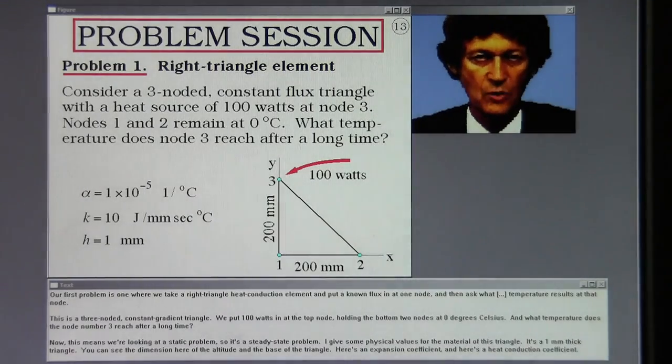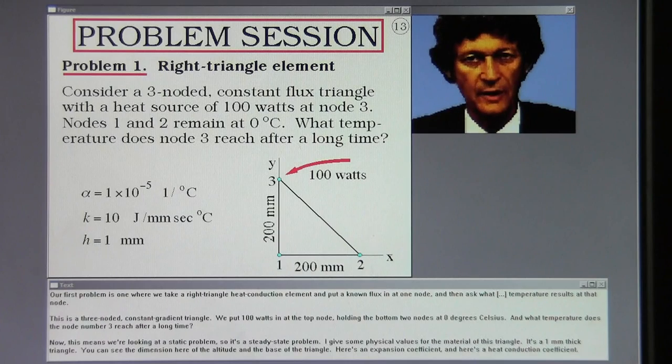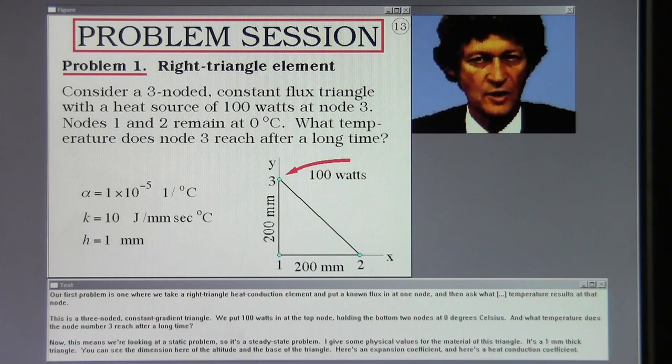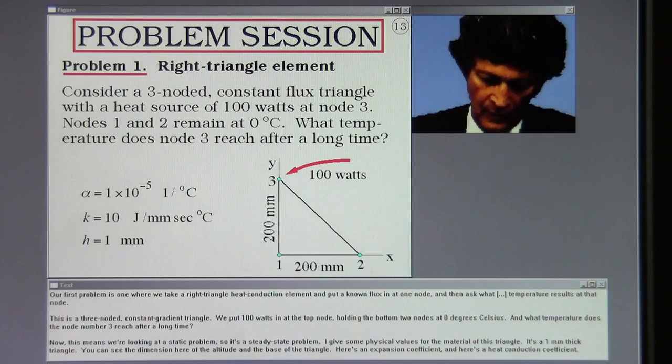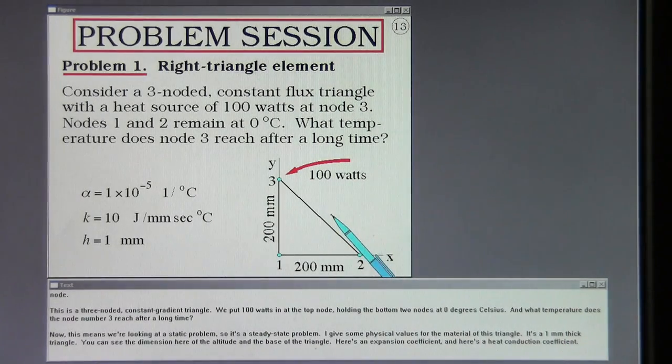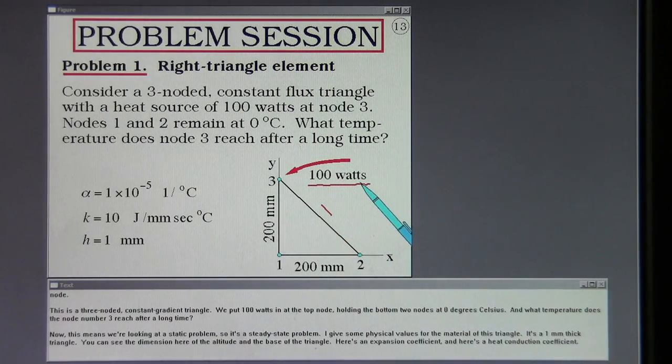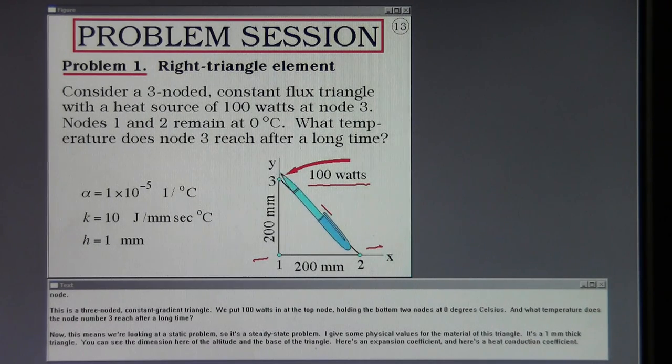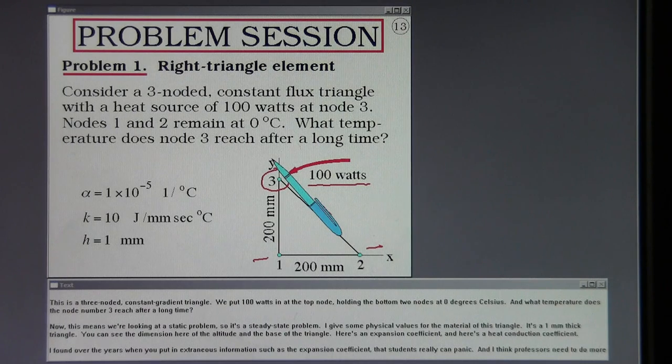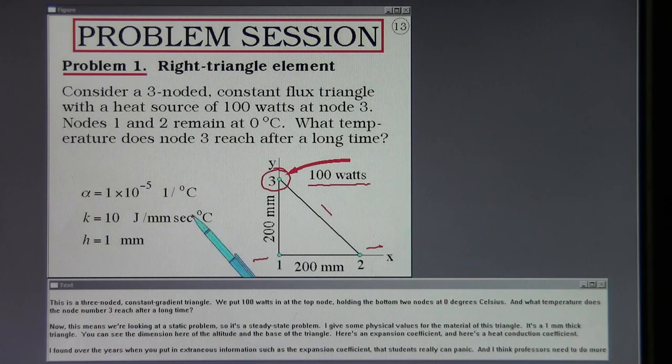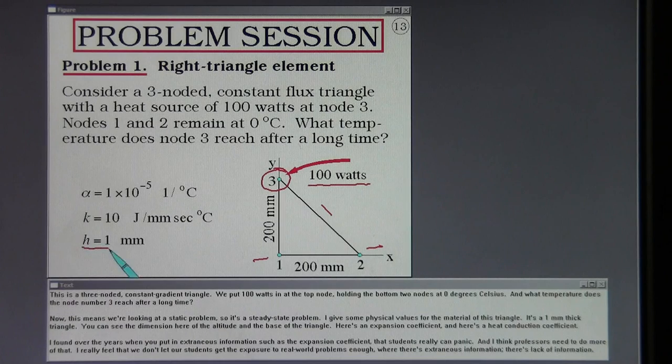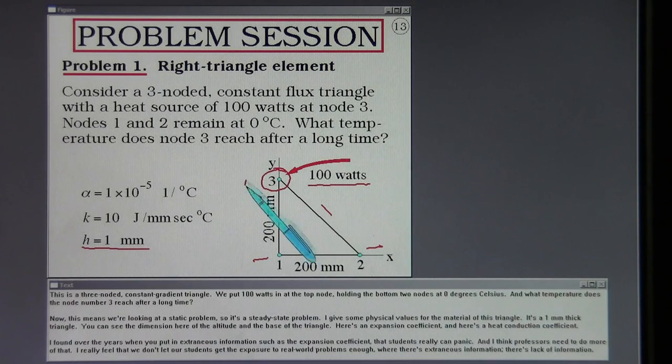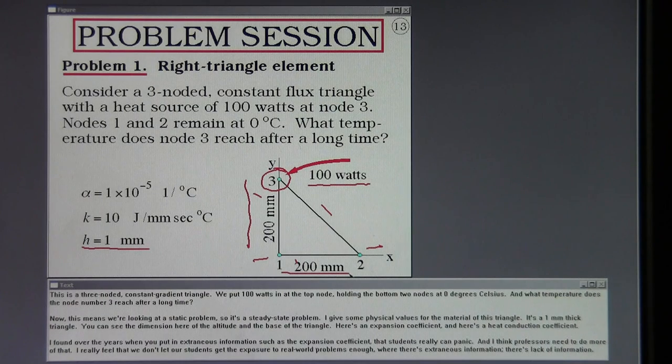Our first problem is one where we take a right triangle heat conduction element and put a known flux in at one node and then ask what the temperature results at that node. This is a three-noded constant gradient triangle. We put a hundred watts in at the top node holding the bottom two nodes at zero degrees Celsius. What temperature does node number three reach after a long time? This means we're looking at a static problem, so it's a steady state problem. I give some physical values for the material of this triangle. It's a one millimeter thick triangle. You can see the dimension here of the altitude and the base. Here's an expansion coefficient and here's a heat conduction coefficient.